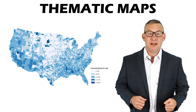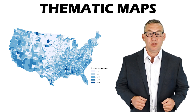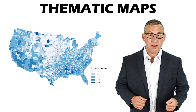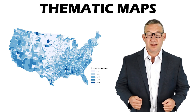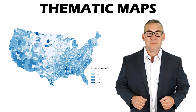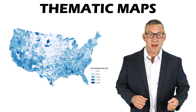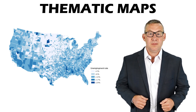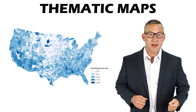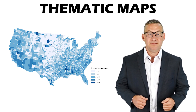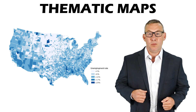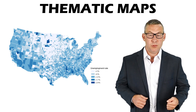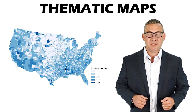Thematic map types include: choropleth, dasymetric, isopleth, dot density, multivariate, proportional symbol, and graduated symbol maps.